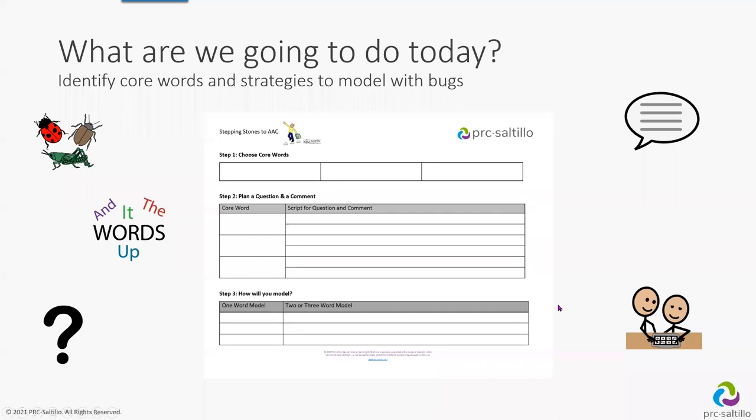What are we going to do today? We're going to identify core words and strategies to model with bugs — this can be live bugs, this can be fake bugs. If you're like me, the whole idea of bugs was not my favorite, but we know it provides a lot of fun and joy to others. We're going to go through the handouts with you tonight. One of them is on the screen here — our organizational tool — and we'll talk a little bit more about that and fill it out together.